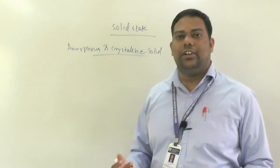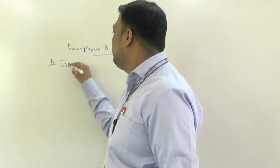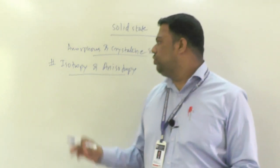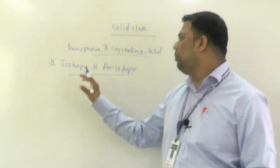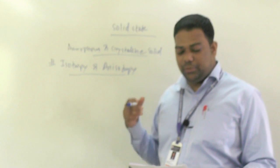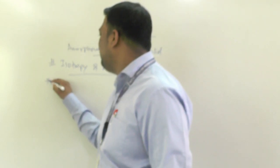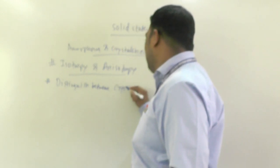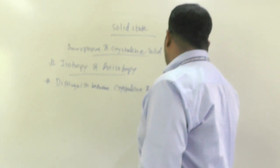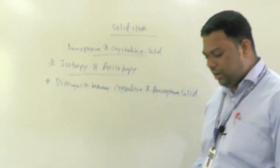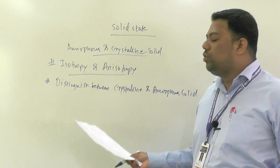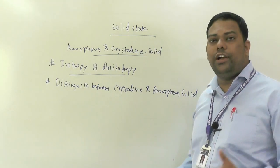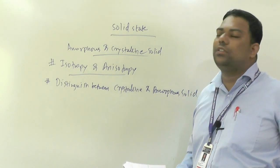In crystalline solids, isotropic and anisotropic properties are very important — you have to focus on the definitions of isotropy and anisotropy. Next, distinguish between crystalline and amorphous solids — that is also very important. You have to go through whether it shows short range order or long range order, whether it has a sharp melting point or does not show a sharp melting point — definite melting point — and many more.